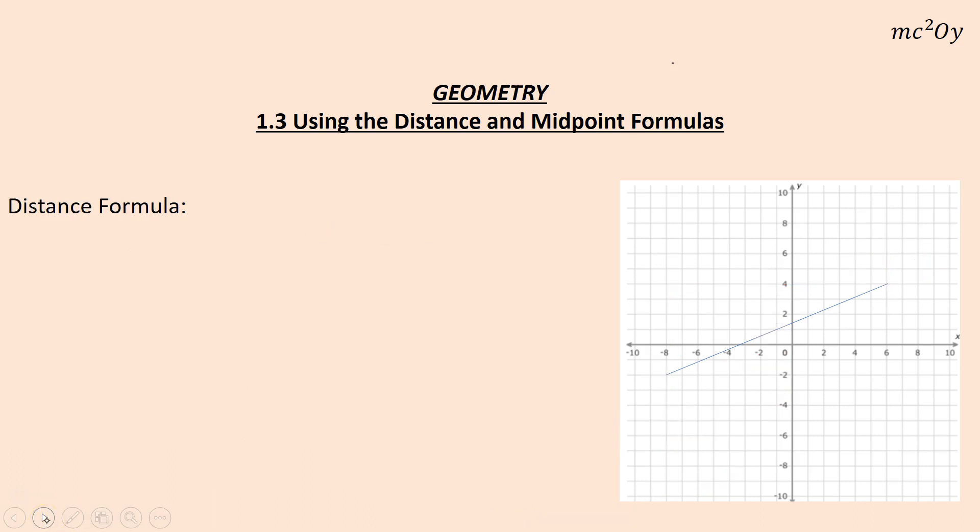All right, now the other thing that goes with that is the distance formula, so I have my same line there, and my same point, A and B, and so the same coordinates, negative eight, negative two, and six, four, and we can go through the same process. You'll notice this is a right triangle, so most of you remember the Pythagorean theorem. This is six, this is fourteen,